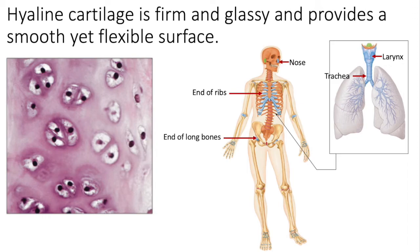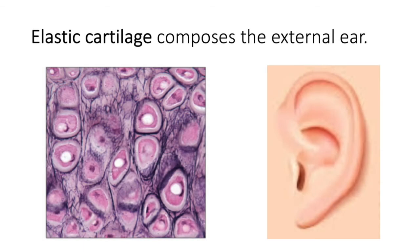Elastic cartilage composes the ear and another structure in the larynx called the epiglottis. Because of all of its randomly positioned elastic fibers, elastic cartilage can resist pulling forces in many directions. So because it's pretty sturdy and firm, it can maintain a nice shape.